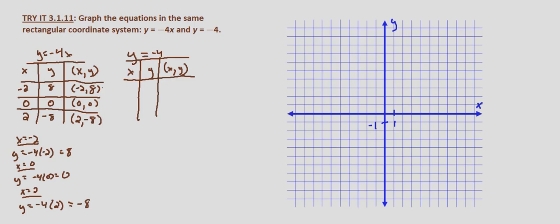If we plot those three points—negative 2, 8; zero, zero; and 2, negative 8—and then draw the line through those three points, that is the line y equals negative 4x.